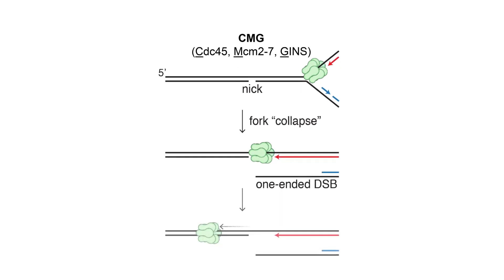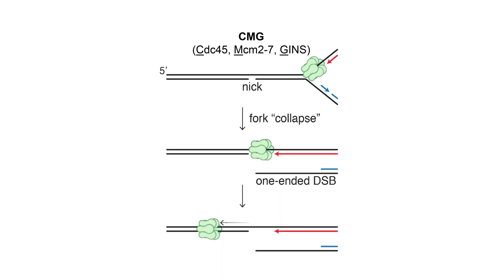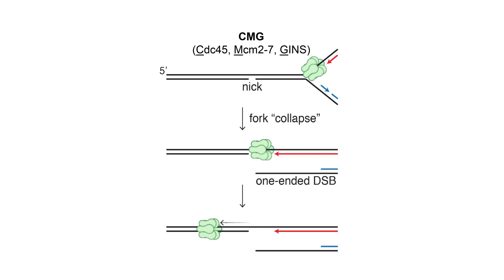We and others considered the possibility that when this happens, the CMG helicase with associated replication proteins might slide onto double-stranded DNA downstream of the nick so that it could be recycled for replication restart after the break has been repaired.